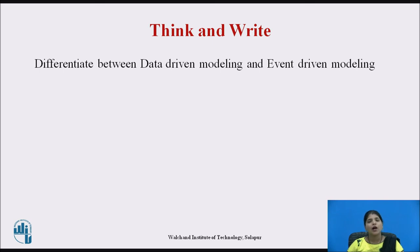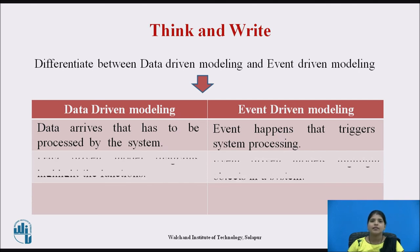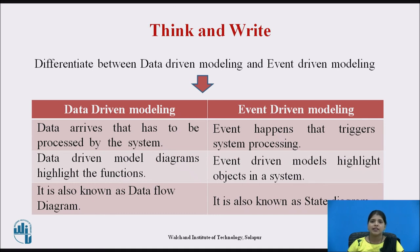Now differentiate between data driven modeling and event driven modeling. First point: in data modeling, data arrives that has to be processed by the system, whereas in event modeling, an event happens that triggers system processing. Second point: data driven diagrams highlight the functions, while event driven models highlight objects in a system. Last point: data modeling is known as data flow diagram and event driven modeling is known as state diagram. These are the two types of behavioral modeling discussed in this video.